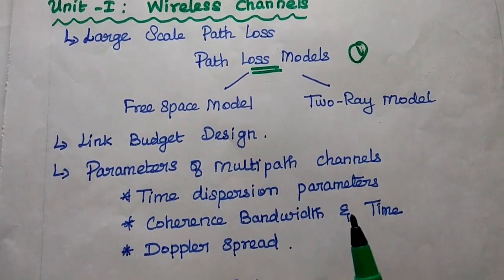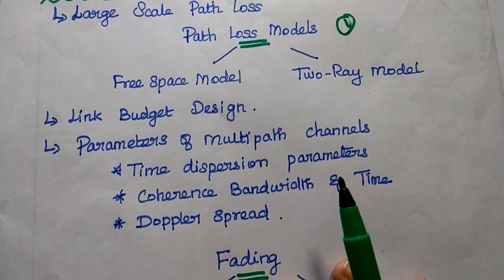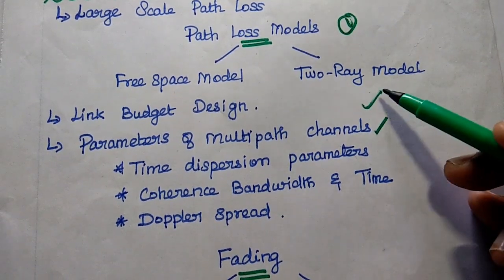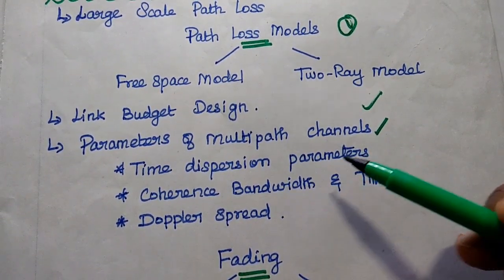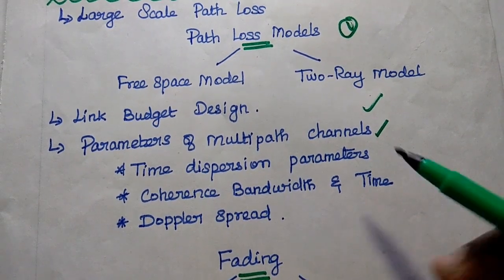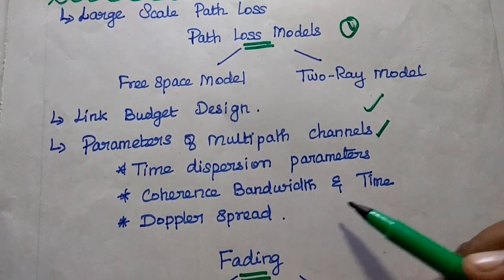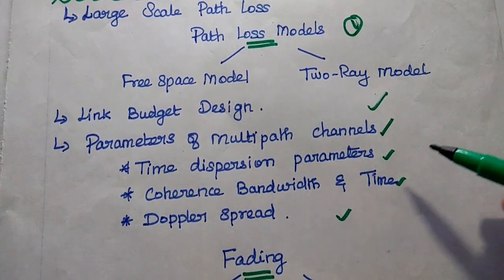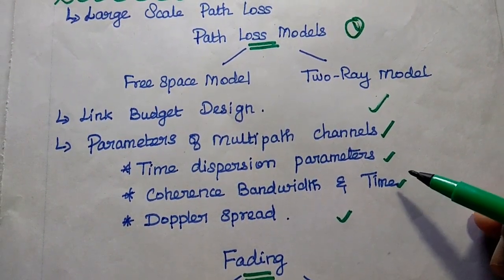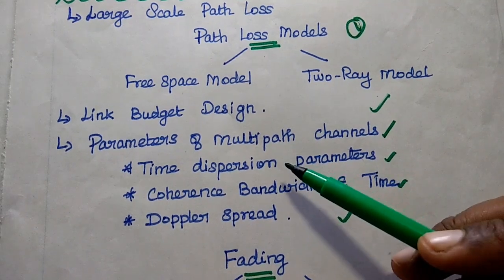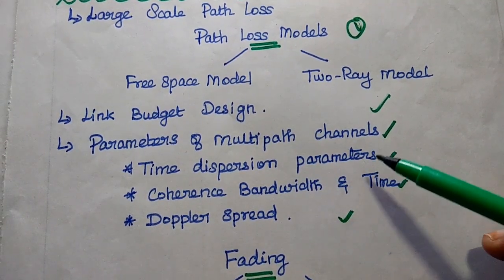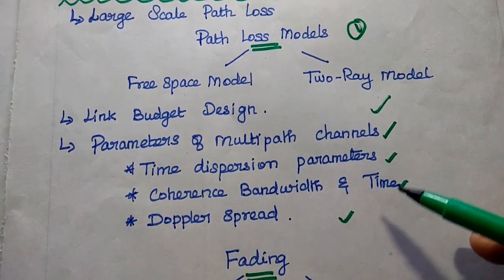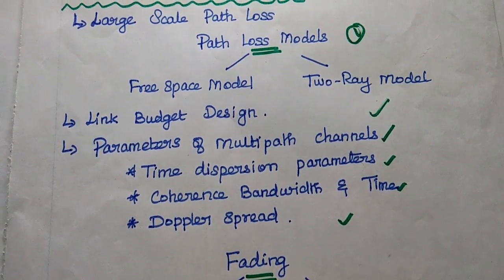Next is link budget design and the parameters of multipath channels. These include time dispersion parameters, coherence bandwidth, coherence time, and Doppler spread. These are the kinds of two-mark questions, but we can also expect an eight-mark question to describe the parameters of multipath fading channels, explaining all three types together.